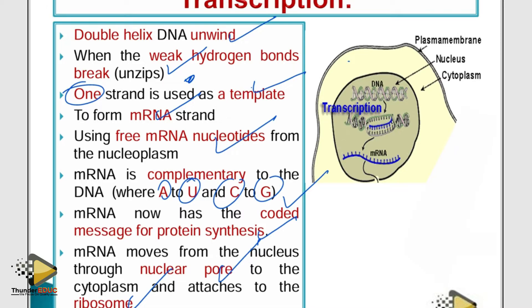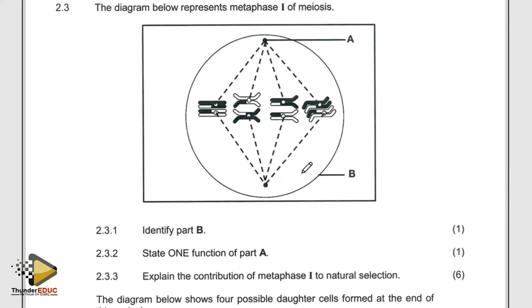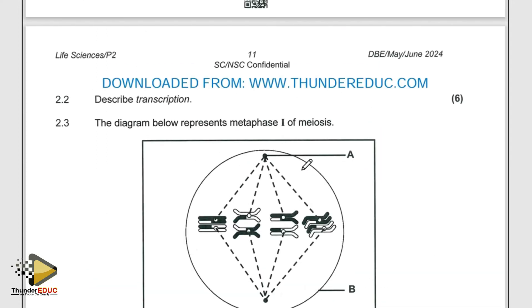The messenger RNA moves out of the nucleus via the nuclear pore to the ribosome in the cytoplasm. That's what you're supposed to explain for transcription. I expected you to have no challenge with this. I emphasized this — you can't go to the paper without knowing it. I expect you guys to get those six marks.